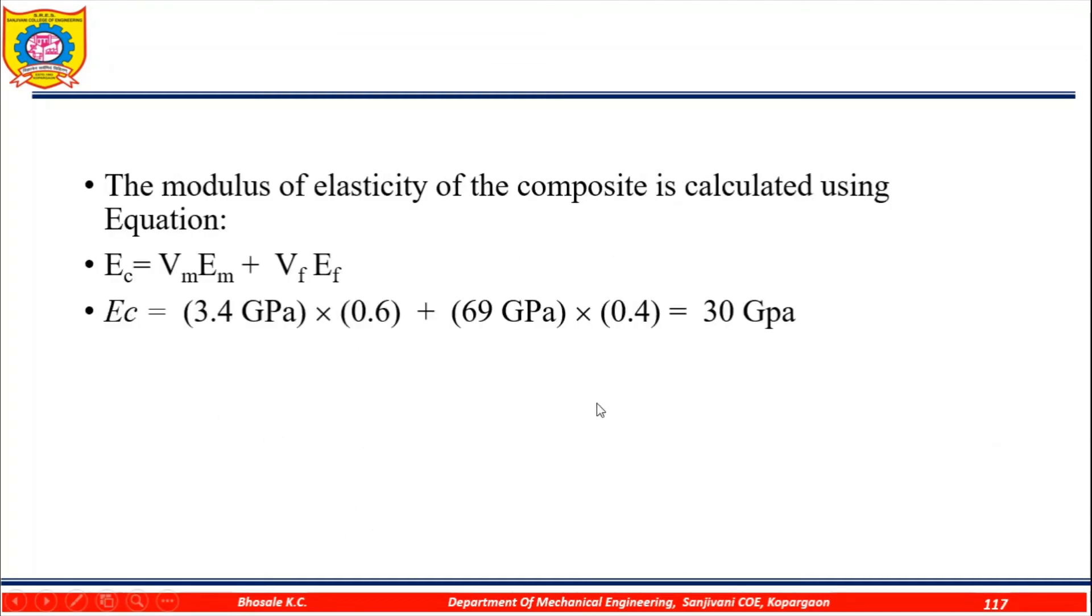The modulus of elasticity of the composite is calculated using the equation: E_c equals V_m times E_m plus V_f times E_f. E_c equals 3.4 GPa times 0.6 plus 69 GPa times 0.4 equals 30 gigapascal.